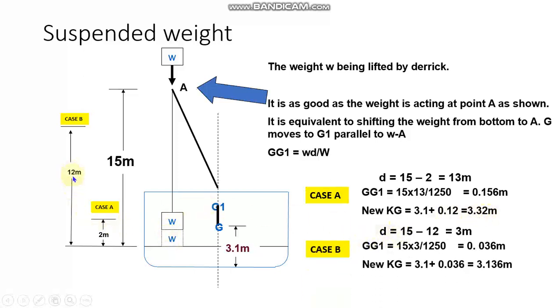Similarly, in case B, I have lifted the weight to a height of 12 meters. So the distance moved will be from A to this point, that is 15 minus 12, 3 meters. So the GG1 will be 15 into 3 by 1250, you get 0.036 meters, and the new KG position will be definitely the initial KG 3.1 plus 0.036, that is 3.136 meters. So this will be the value of KG in case A and case B.